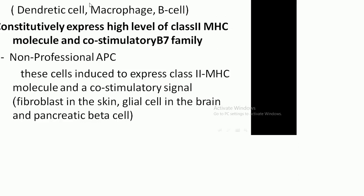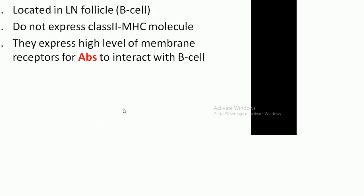Antigen-presenting cells are characterized by their ability to express MHC class 2 on the cell surface and deliver co-stimulatory signals such as B7-CD28. Professional antigen-presenting cells include dendritic cells and macrophages, and B cells, which constitutively express high levels of MHC class 2 and co-stimulatory molecules. Non-professional antigen-presenting cells are induced to express MHC class 2 and co-stimulatory signals, such as fibroblasts in the skin and glial cells in the brain. Follicular dendritic cells do not arise from bone marrow, are located in lymph node follicles, do not express MHC class 2, but express high levels of membrane receptors for antibodies.